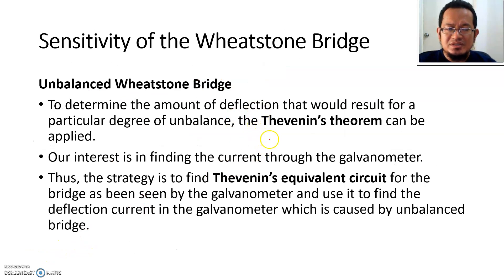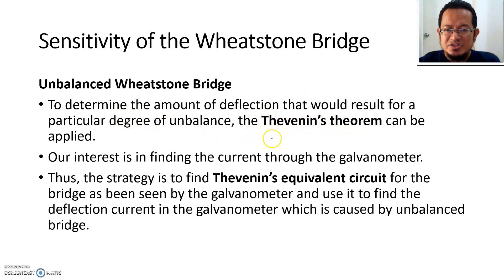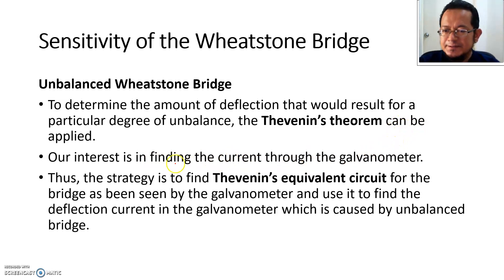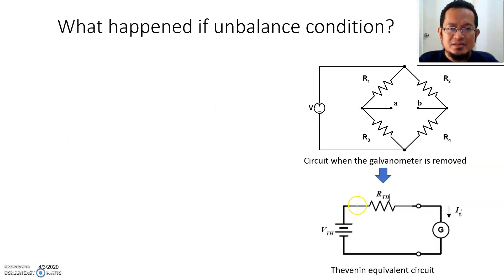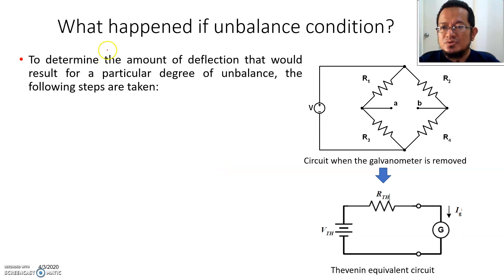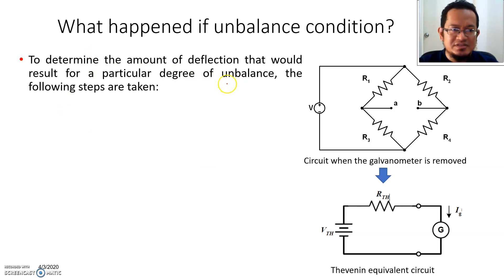To determine the amount of deflection that will result for a particular degree of imbalance, we can use Thevenin's theorem. Our objective is to find the current through the galvanometer — how much current flows through the galvanometer during unbalanced condition. The strategy is to find the Thevenin's equivalent circuit for the bridge as seen by the galvanometer, and use it to find the deflection current caused by the unbalanced bridge. To determine the amount of deflection for a particular degree of unbalance, the following steps are taken.